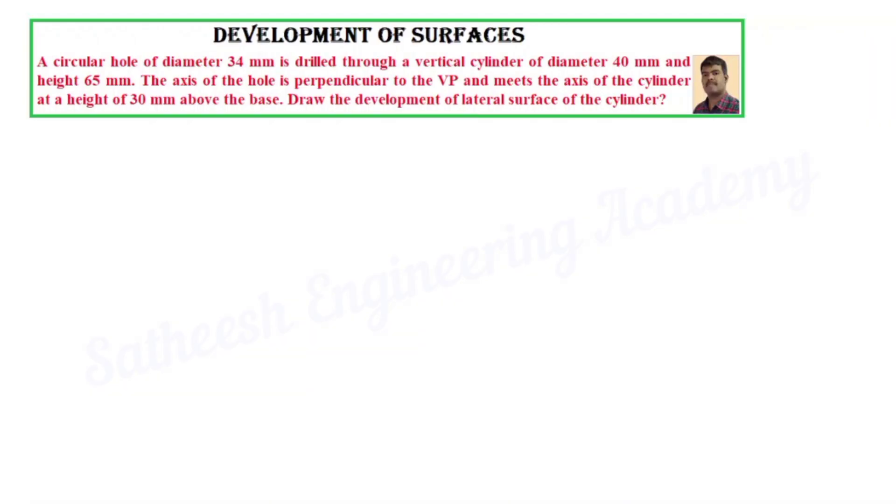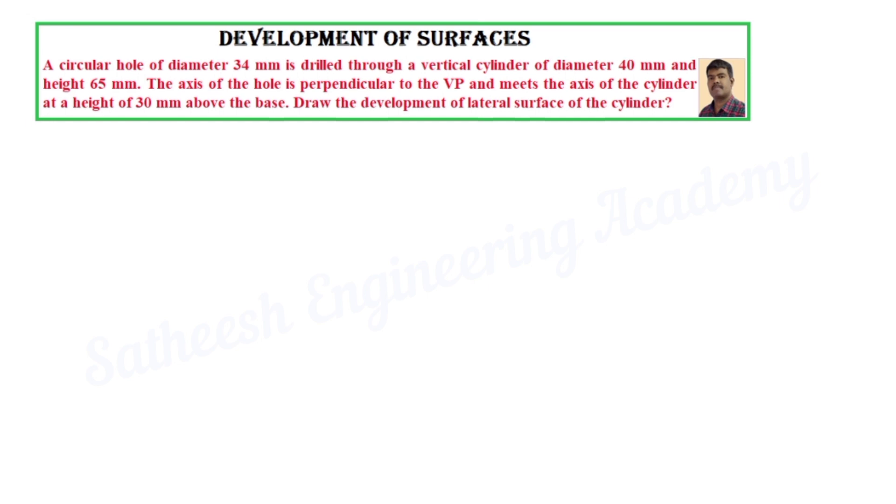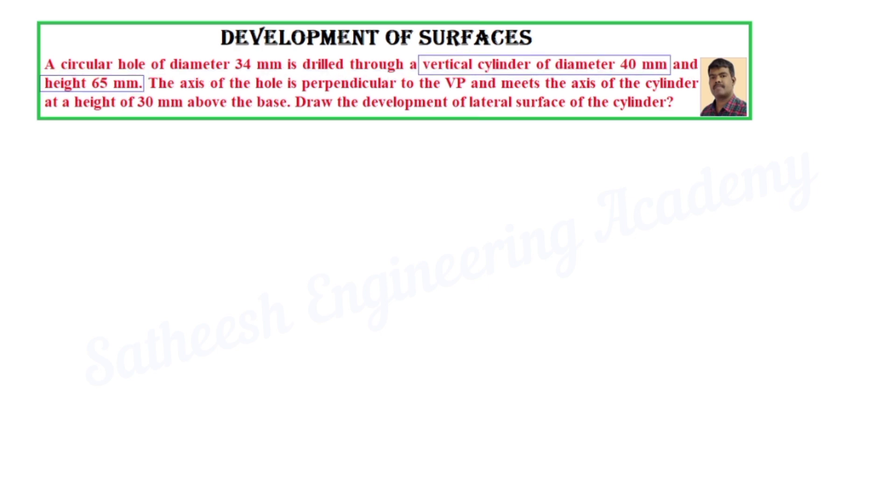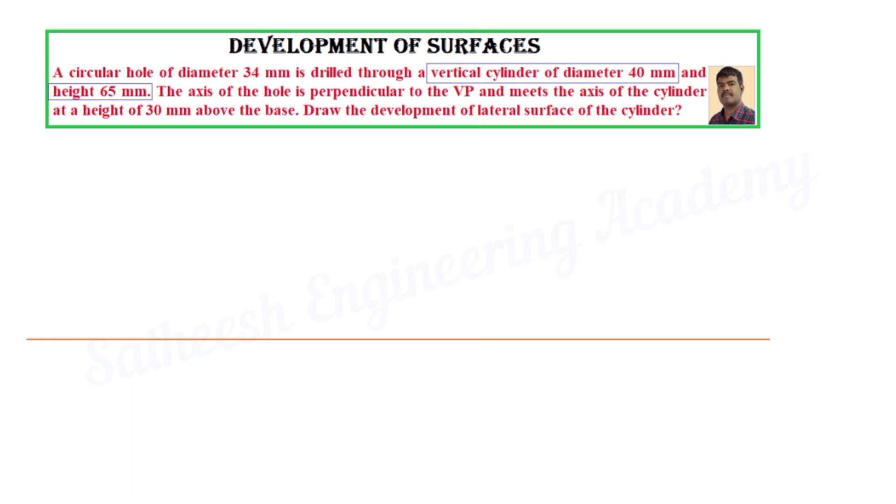Hi students, welcome. Now we are discussing how to draw the development of surface of a given cylinder. Our problem is: a circular hole of diameter 34 mm is drilled through a vertical cylinder of diameter 40 mm and height 65 mm. The axis of the hole is perpendicular to the VP and meets the axis of the cylinder at a height of 30 mm above the base. Draw the development.